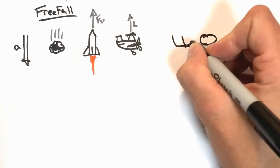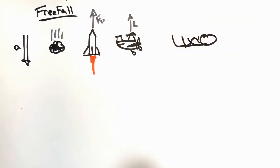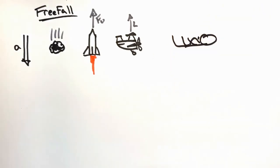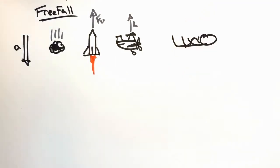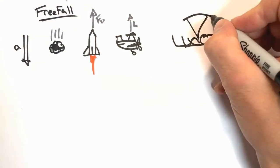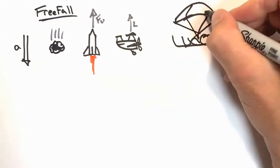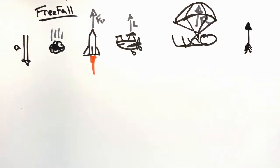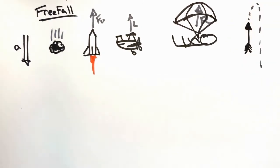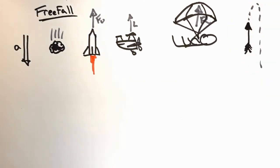A skydiver falling — if we ignore the air resistance, then they are in fact in freefall, unless of course they've got a parachute. Even things moving upward, like an arrow, can be in freefall. The arrow is in freefall on the way up and still in freefall on the way back down.